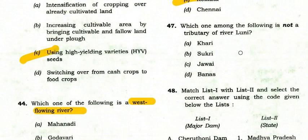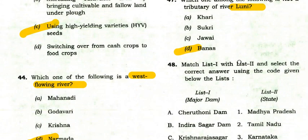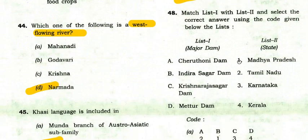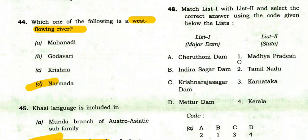Which one among the following is not a tributary of river Luni? The right answer is Banas — Banas is not a tributary. Khari, Sukri, and Jawai are tributaries of Luni. Many people might commit a mistake on this question.